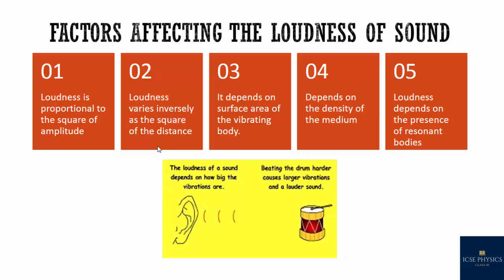The loudness of sound heard at a place depends upon five factors. First, when a body vibrates with greater amplitude, it sends forth a greater amount of energy, so the sound appears louder — loudness is proportional to the square of amplitude. Second, loudness varies inversely as the square of the distance. If the listener is close to the source, the sound is louder; farther away, it becomes feeble and may become inaudible.